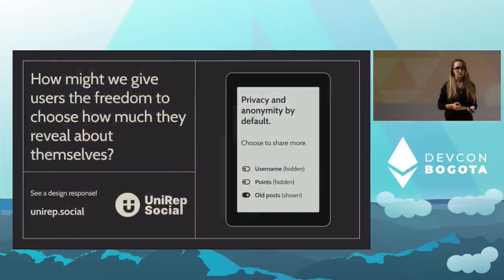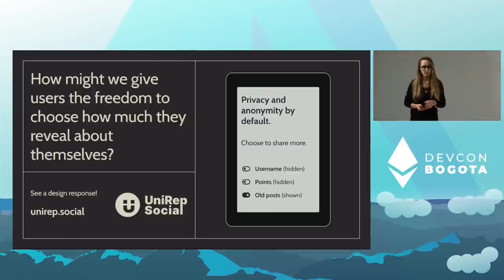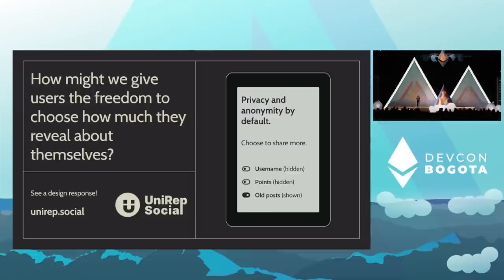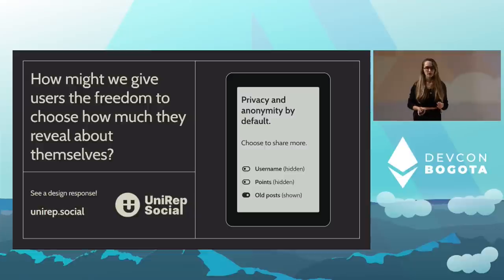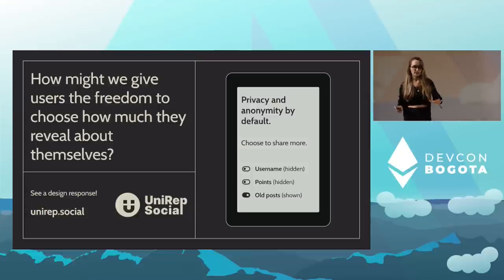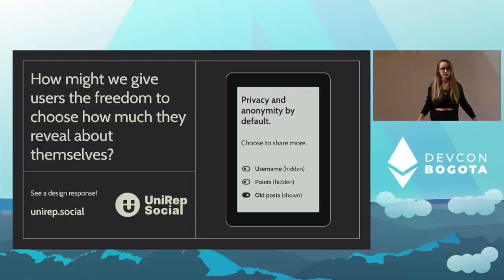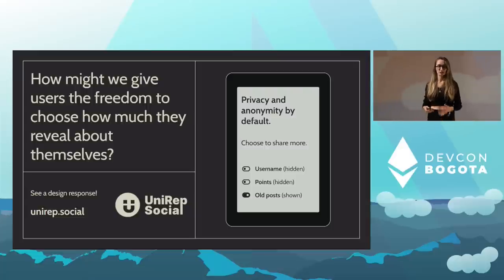How might we give users the freedom to choose how much they reveal about themselves? Because ZK apps give us anonymous identities, it's up to us to preserve or break the level of anonymity that we start with. When we're anonymous, our identity is unknown but our actions are public. Trails of actions we have taken can be clues to our real identities.